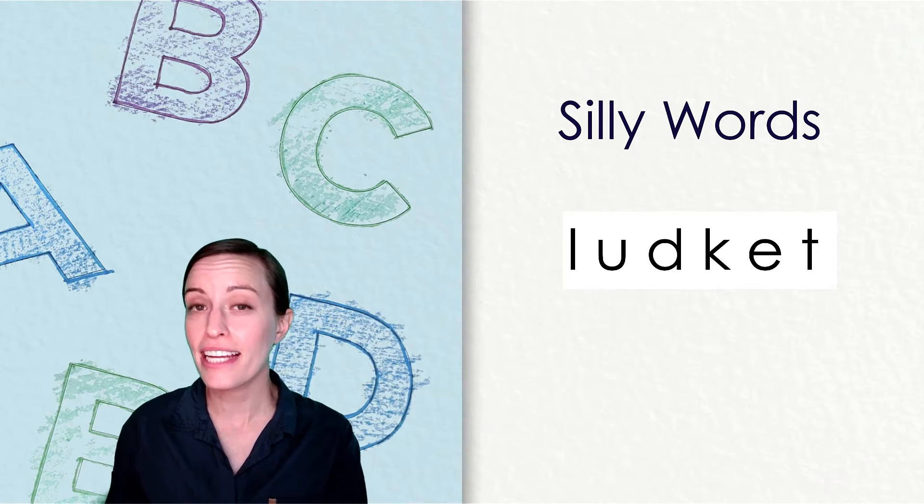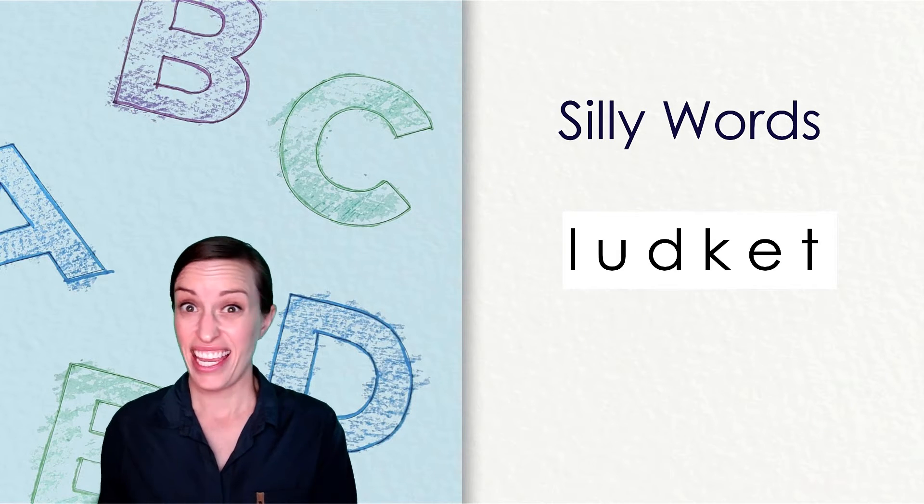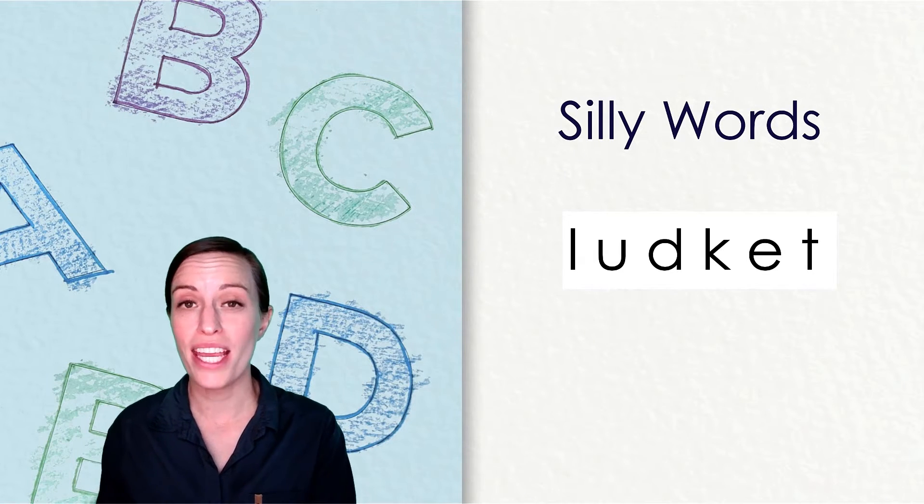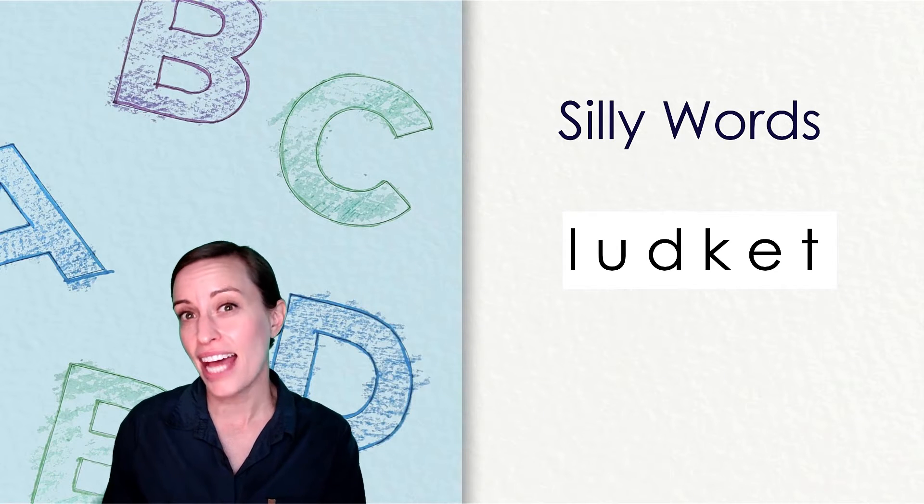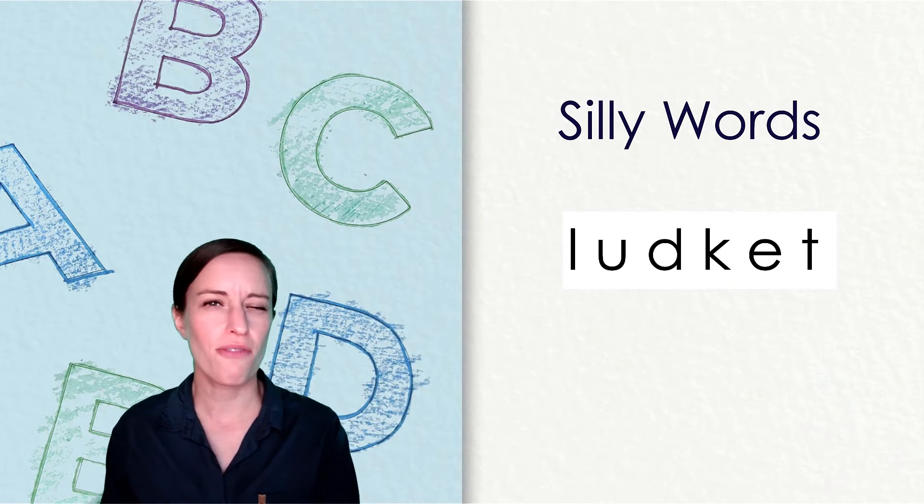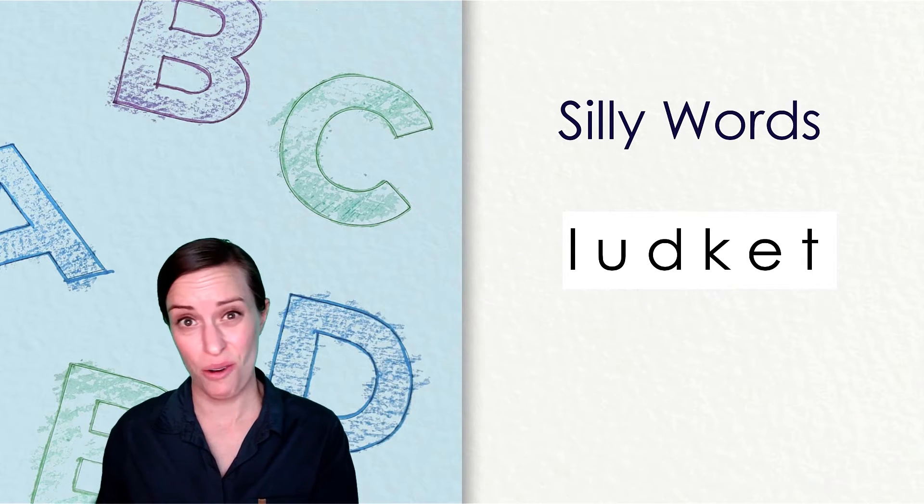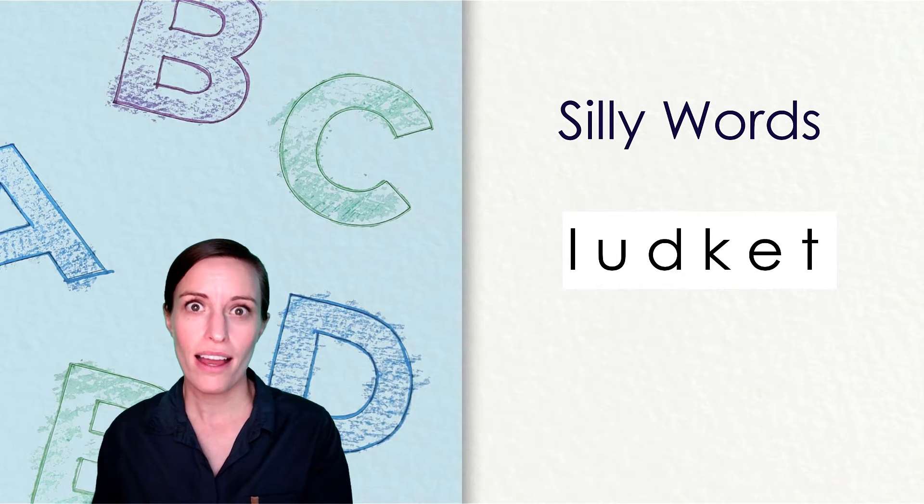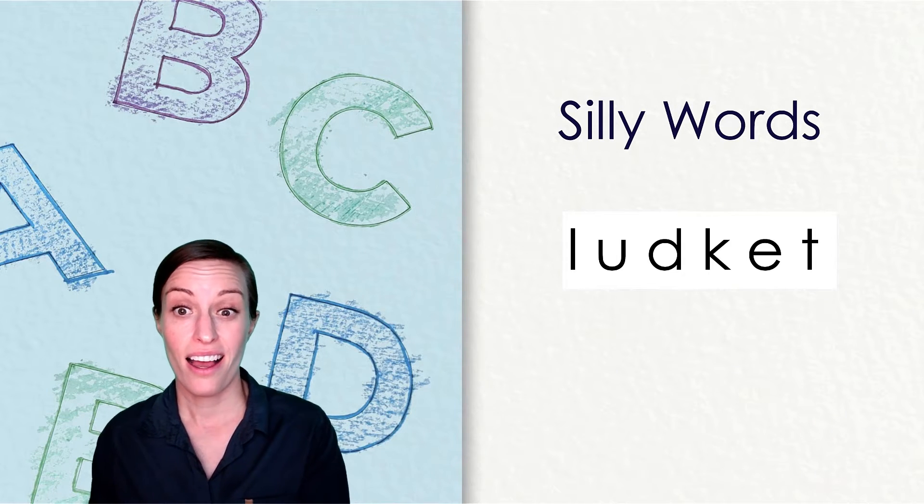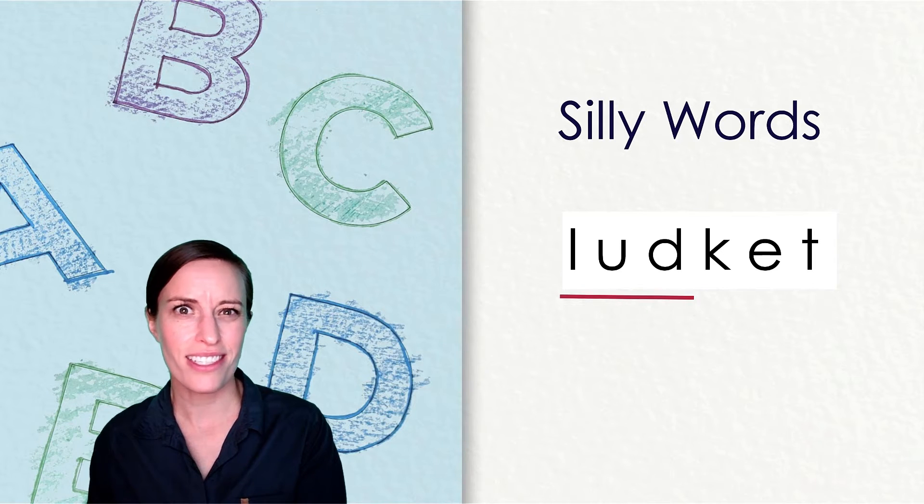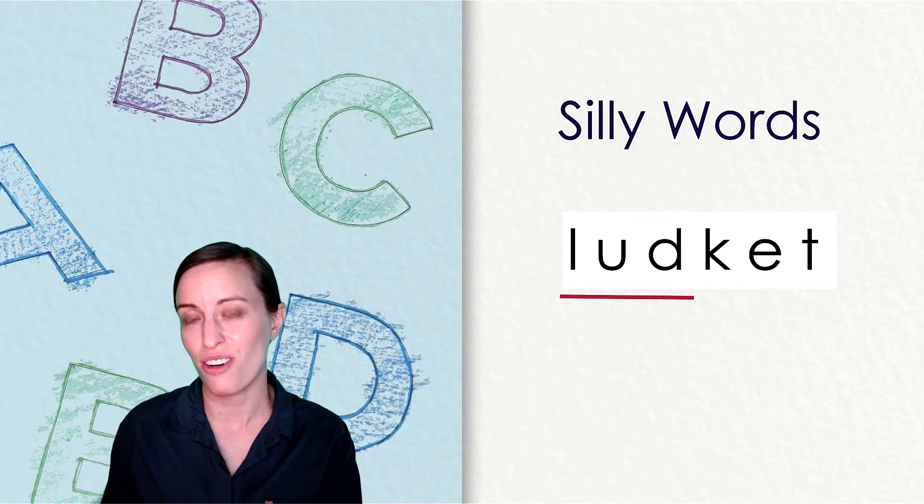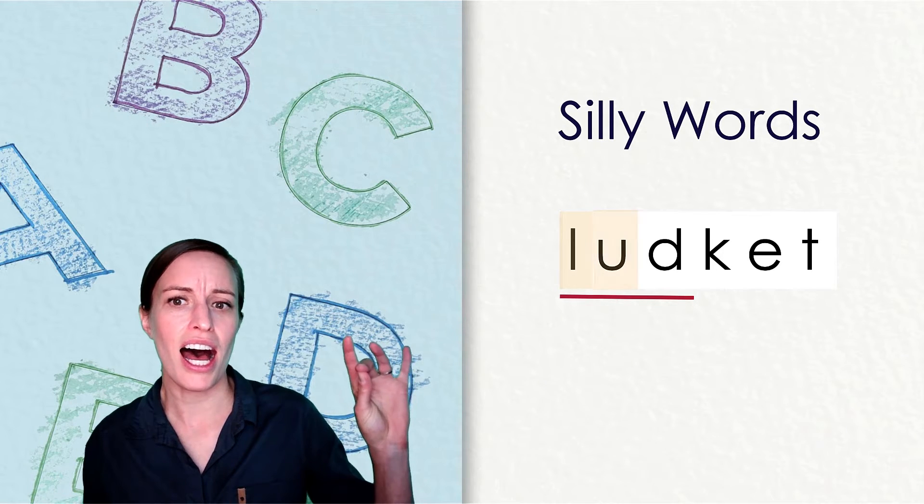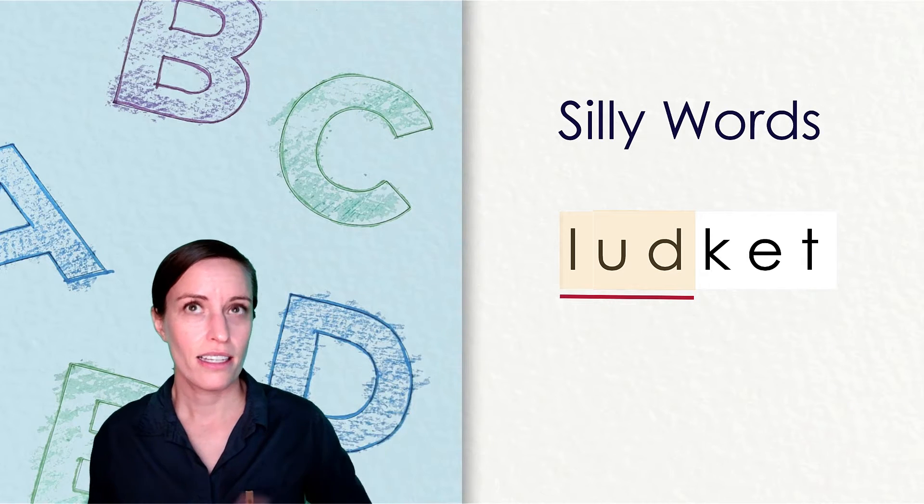We are going to practice reading some silly words. Even if we don't know the words, we can still work to read them because we know the sounds that the letters make. Let's look at this first one together. I don't know this word, but I know that I can look at each syllable and then put those syllables together. This is the first syllable. I know that because I found the first vowel. L-U-D. L-U-D.